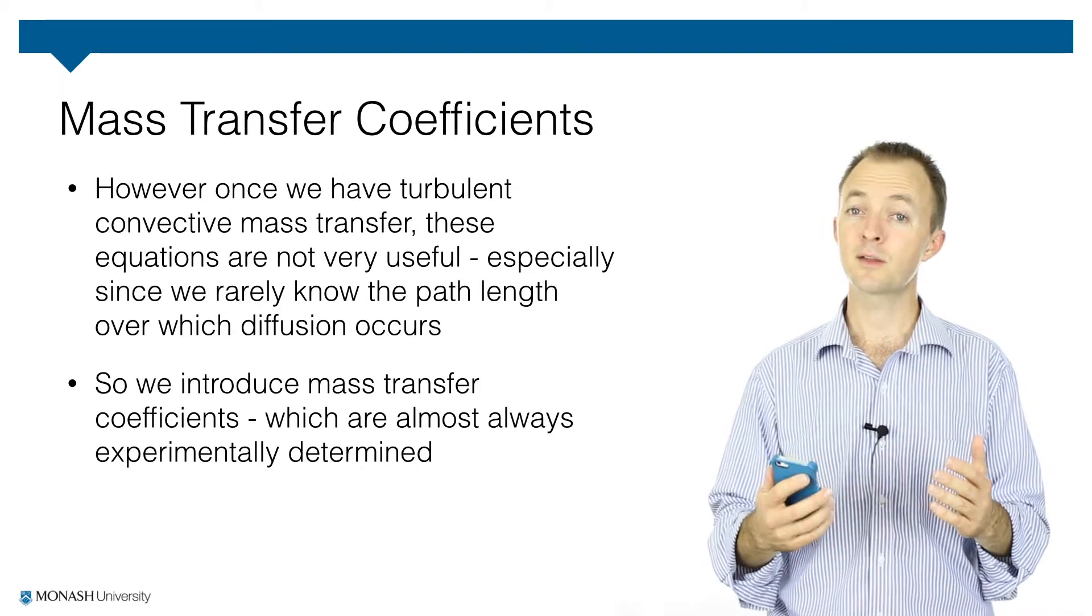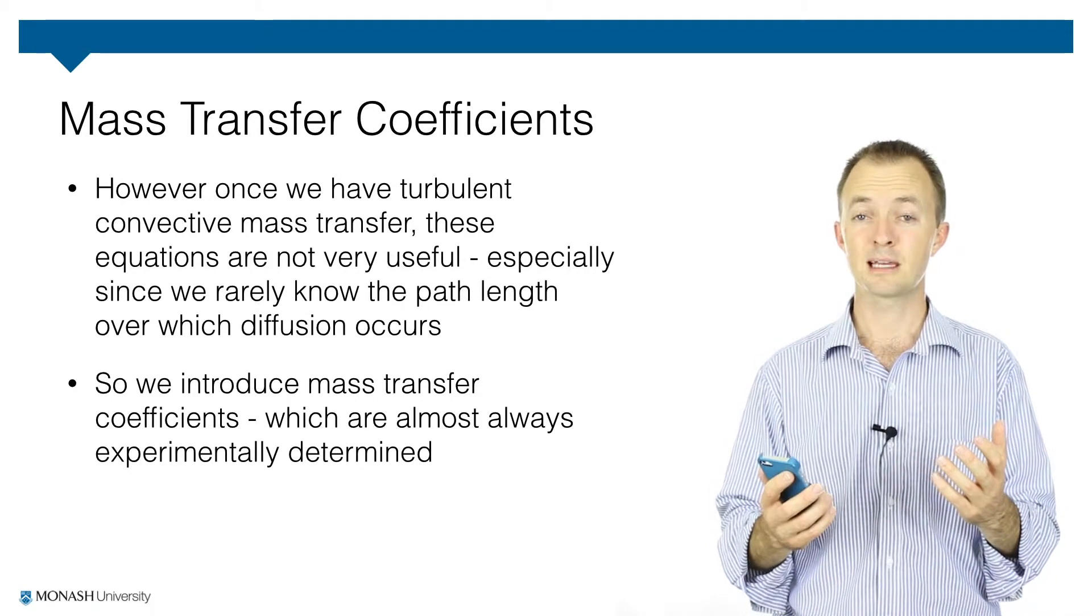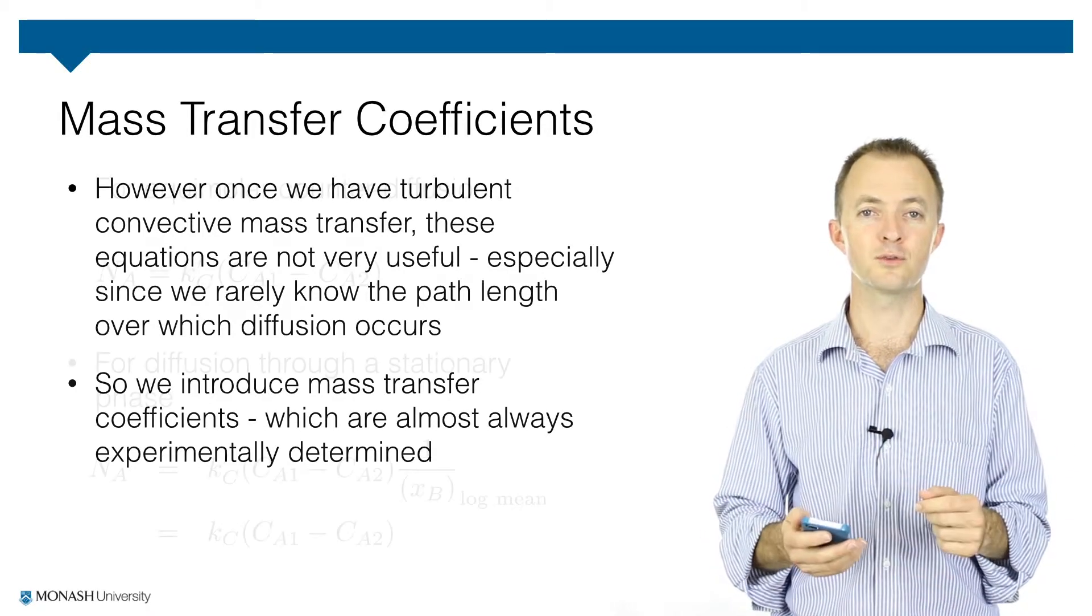So to get around that, what we often do is combine the diffusion coefficient with the path length to create a new coefficient which is called a mass transfer coefficient.